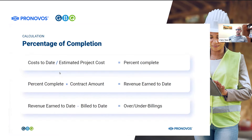So in this case, let's say I think it's going to take me $10 to build that rocking chair. So $5 of cost incurred divided by $10 total estimated cost — I am 50% complete on that rocking chair.